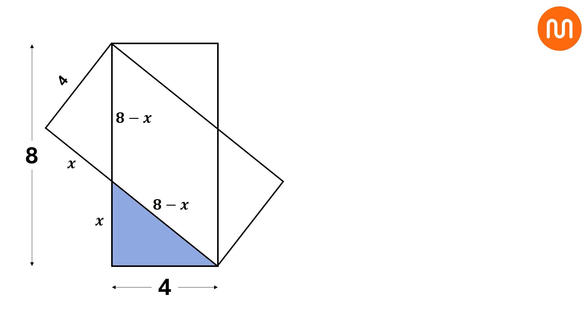x squared plus 4 squared equals 8 minus x squared. Expanding and simplifying, x squared plus 16 equals 64 minus 16x plus x squared. Canceling x squared from both sides, 16x equals 48. Solving for x, x equals 3.